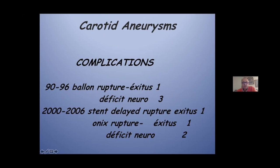The complications: from 1990 to 1996, only with balloon technique — one rupture of the siphon with fatal exit, and three neurological deficits secondary to thrombus migration inside. From 2000 to 2006 — one stent delayed rupture one week later after one stent, and one rupture with onyx — the patient was in very bad situation and died two days later, two neurological deficits.